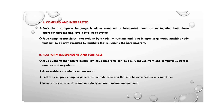Compiled and interpreted: many computer languages like C and C++ are either compiled or interpreted, but Java combines both approaches. The Java compiler translates Java code into bytecode instructions, and the Java interpreter accepts the bytecode and translates it into machine code that can be directly executed by the machine running the Java program.